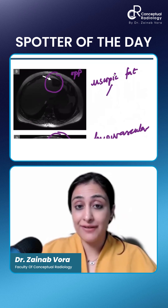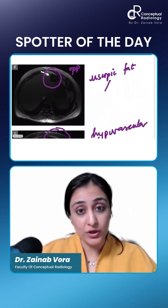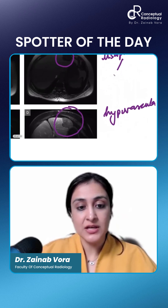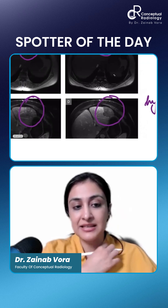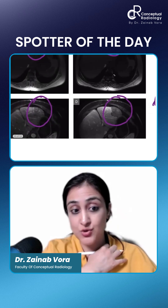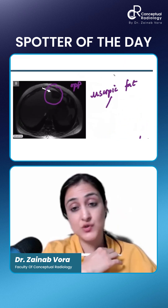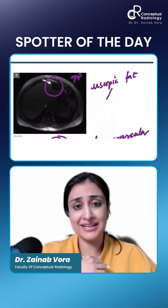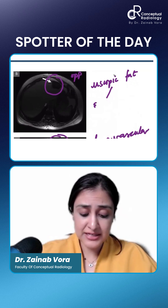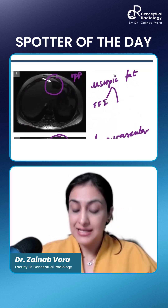One is focal fat infiltration. This is not focal fat infiltration because it is displacing the vessels — it is not allowing vessels to infiltrate. It has mass effect. So it is not focal fat infiltration for sure. First differential diagnosis is out: focal fat infiltration.